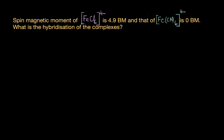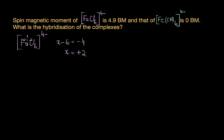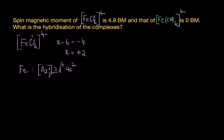The first step is to figure out the oxidation state of the central metal ion. Assuming the oxidation state of Fe as x, then x minus 6 equals minus 4. Chloride ions are anionic ligands with a charge of minus 1, so this gives us the oxidation state of Fe as plus 2. The electronic configuration of Fe is [Ar] 3d⁶ 4s², so that of Fe²⁺ would be [Ar] 3d⁶ 4s⁰.